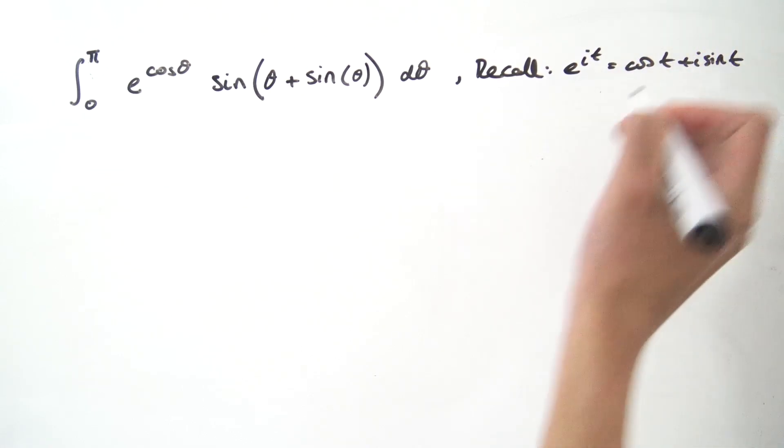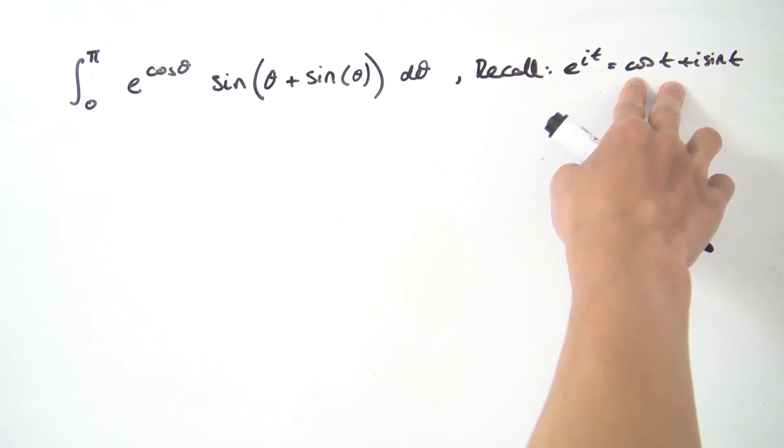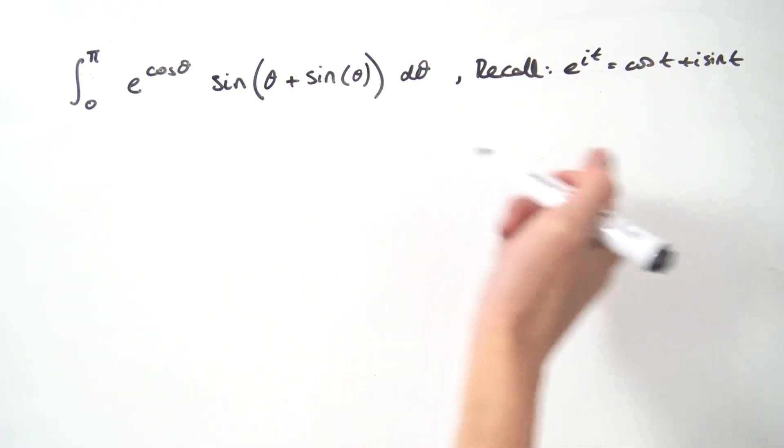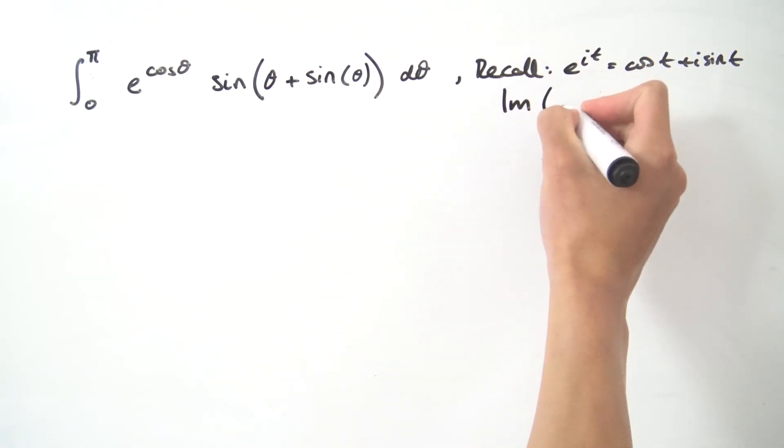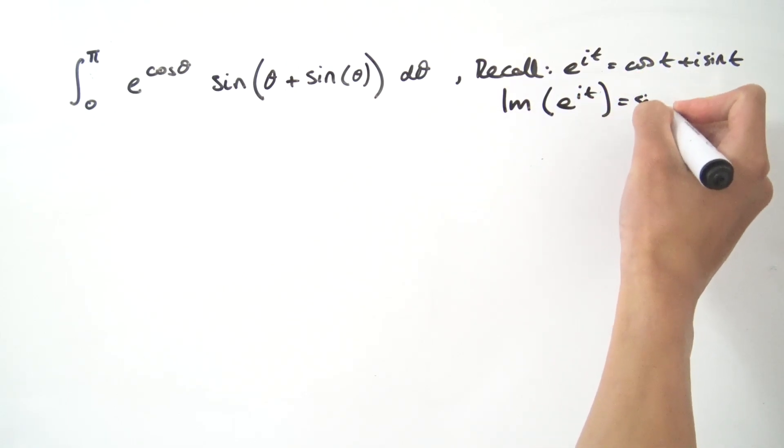In the previous video we took the real part of this complex exponential because we wanted to recover the cosine. However here we want the sine, so I'm going to take the imaginary part instead, and that is going to give us the sine function that we wanted.